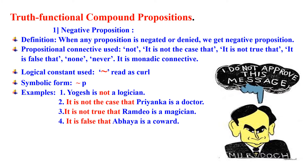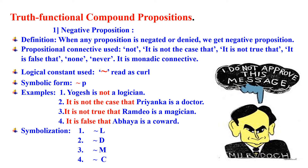Now let us take examples. First: 'Yogesh is not a logician.' Here the component part will be 'Yogesh is a logician' and the connective will be 'not.' Second: 'It is not the case that Priyanka is a doctor' — component: 'Priyanka is a doctor,' connective: 'it is not the case that.' Third: 'It is not true that Ramdev is a magician' — connective: 'it is not true that,' component: 'Ramdev is a magician.' Fourth: 'It is false that Abhay is a coward' — component: 'Abhay is a coward,' connective: 'it is false that.' So the symbolizations are: curl L, curl D, curl M, and curl C respectively.